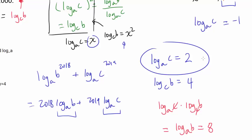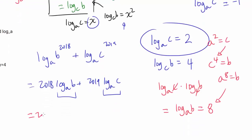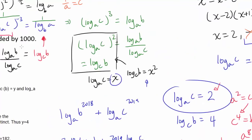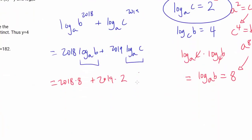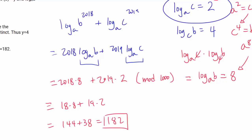Another way: from c = a² and c⁴ = b, substituting gives a⁸ = b, so log base a of b = 8. So we have 2018 × 8 + 2019 × 2. We want the remainder when divided by 1000, so we compute 18 × 8 + 19 × 2 = 144 + 38 = 182.